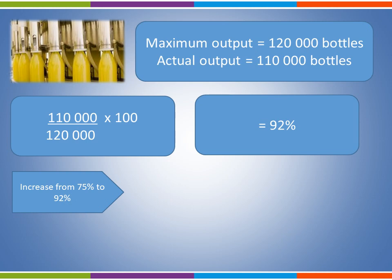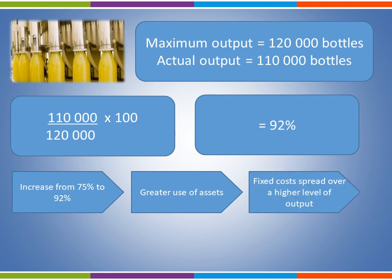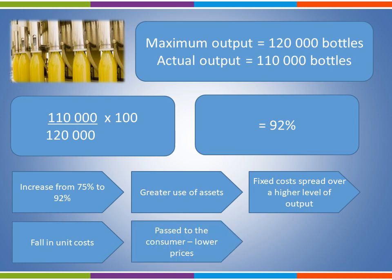We could start by quoting the figures: there has been an increase in capacity utilisation from 75% to 92%. As a result, there is greater use of the assets, such as the machinery used to bottle the apple juice. This means that fixed costs are spread over a higher level of output, resulting in a fall in unit costs. The business may decide to pass this on to the consumer in the form of lower prices, which — assuming the product is price elastic — would mean an increase in demand and an increase in revenue.